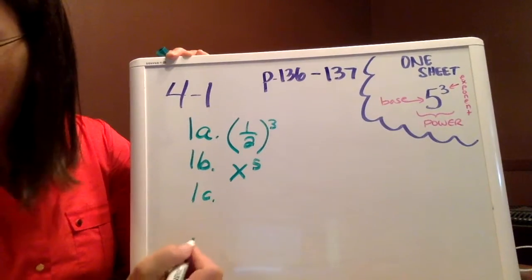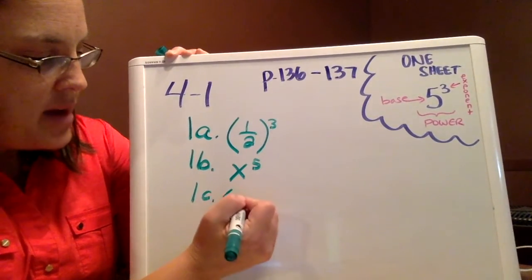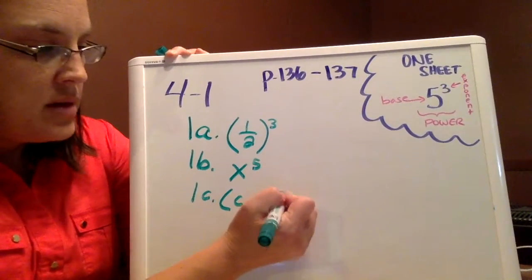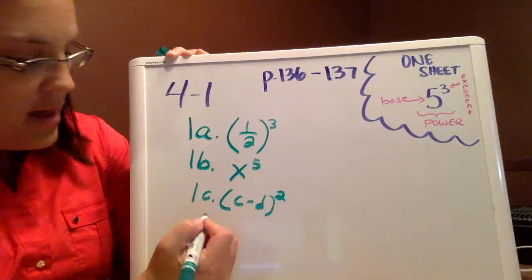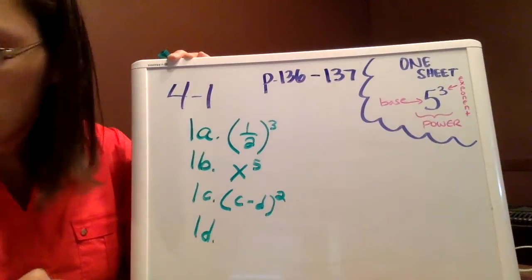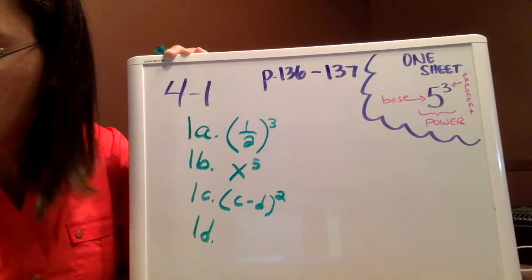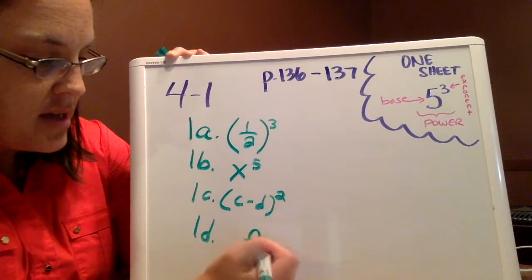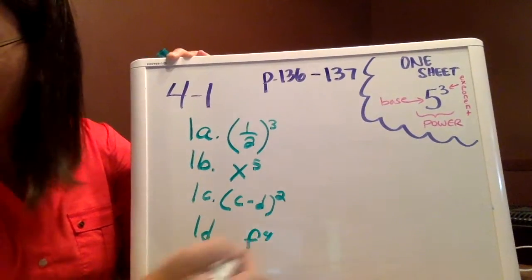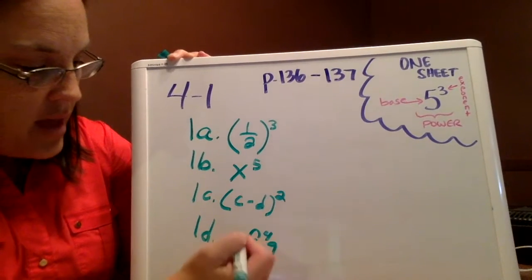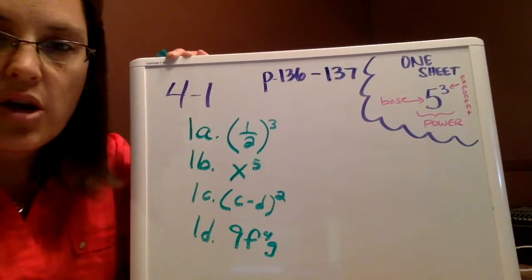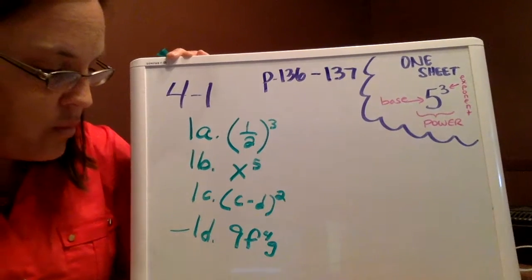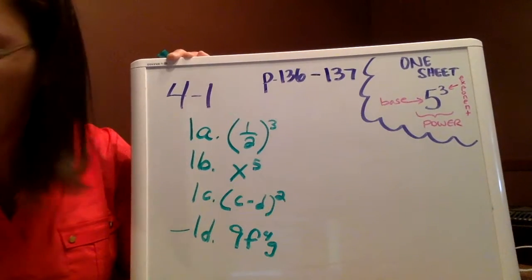For 1c, we have 2c minus d. So I'm just going to write c minus d, the quantity, and then square it. And then finally 1d. Don't let those other variables and numbers throw you off. I'm just going to combine all the f's, which is four of them, and there's one g. Usually that 9, the coefficient, goes first. So the proper way to write that would be 9f to the fourth g.